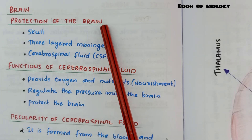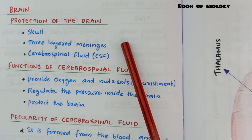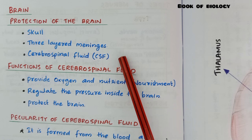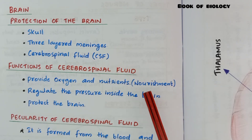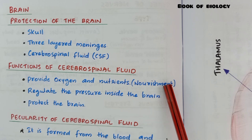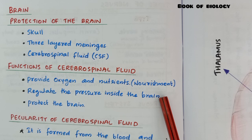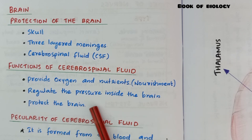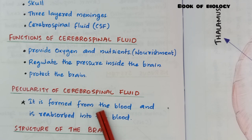One important topic is the brain. Protection of the brain is provided by the skull, three-layered meninges, and cerebrospinal fluid (CSF). Functions of cerebrospinal fluid: provide oxygen and nutrients, regulate the pressure inside the brain, and protect the brain from external injuries. CSF is formed from the blood and is reabsorbed into the blood.